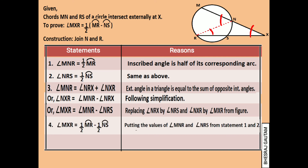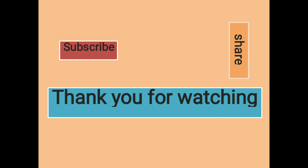Statement four then becomes: angle MXR is equal to half of arc MR minus arc NS, as shown in the last step. I hope the steps mentioned above helped you in getting the concepts. Please feel free to contact on any curiosity. See you in the next video. Take care. Bye-bye.